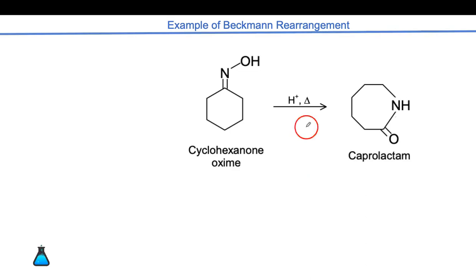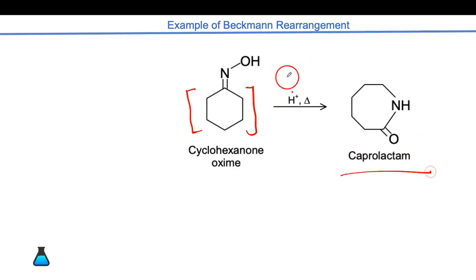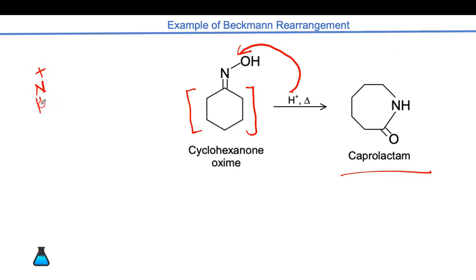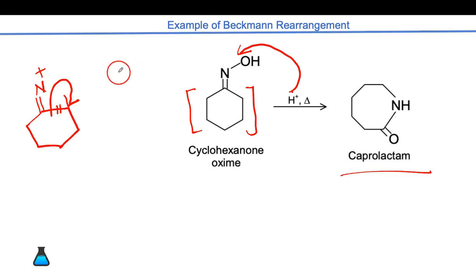Let's take a good example — a six-membered ring oxime. When treated with H⁺, it gives caprolactam. By the same mechanism, H⁺ attacks the hydroxy group, giving N⁺ double bond in the six-membered ring. Both electrons are accepted by the carbon, giving N⁺ double bond again.